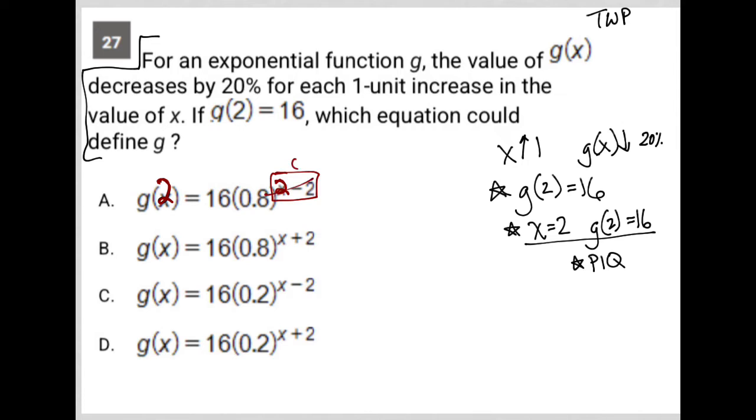2 minus 2 is 0. 0.8 to the zero power. Well, that's just 1. 16 times 1 is 16. So I do get here g(2) is equal to 16. So I like that. I like that answer because it gives me exactly what I was expecting to get. The question told me.